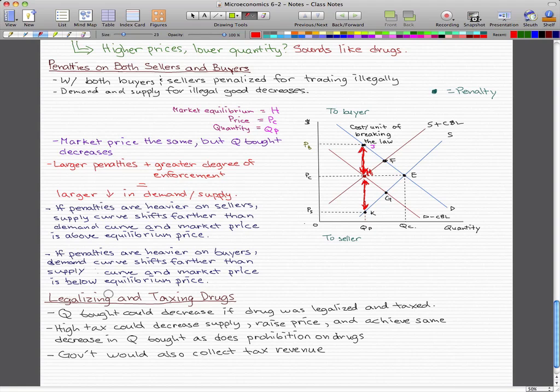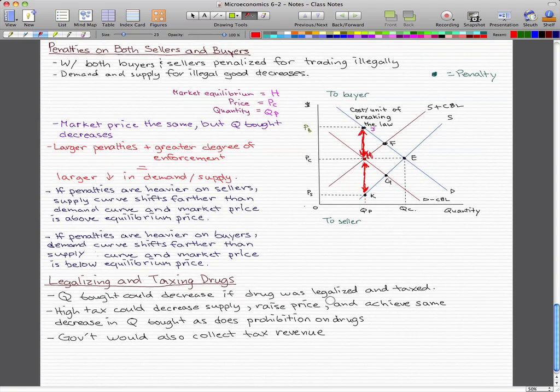If we legalize and tax drugs, the pro of that would be that government would also collect tax revenue. So, that's a good thing because the government would make a shitload of money collecting taxes from drug dealers. But, arguments for this extend beyond economics, and it's something that I'm not going to get into. But, other than that, this is it for this chapter.